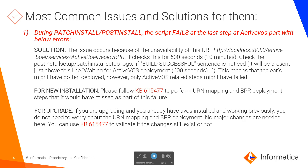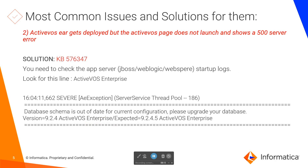The second common issue: after all ActiveVOS EAR and WAR files are deployed and the post-install shows no issues, some customers cannot launch the ActiveVOS URL and see a 'not found' server error. About 90% of the time this issue is related to the database schema being out of date. Look into your app server startup logs for the keyword 'activevos enterprise' — you will see a message saying the database schema is out of date and needs to be upgraded to a specific version.